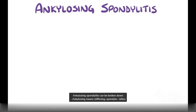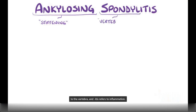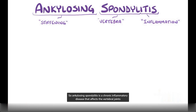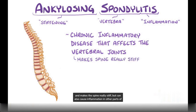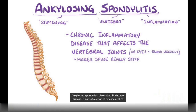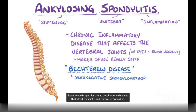The name ankylosing spondylitis can be broken down. Ankylosing means stiffening, spondylo refers to the vertebra, and itis refers to inflammation. So ankylosing spondylitis is a chronic inflammatory disease that affects the vertebral joints and makes the spine really stiff, but can also cause inflammation in other parts of the body, like the eyes and blood vessels. Ankylosing spondylitis, also called Bechterew disease, is part of a group of diseases called seronegative spondyloarthropathies.